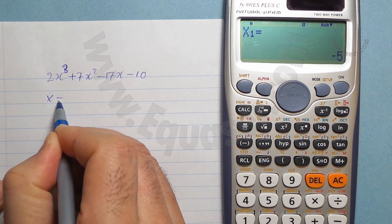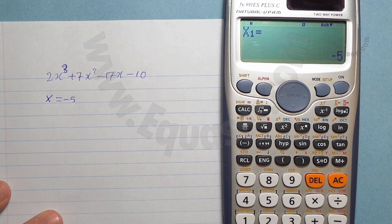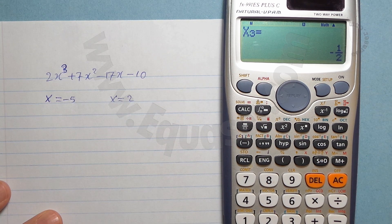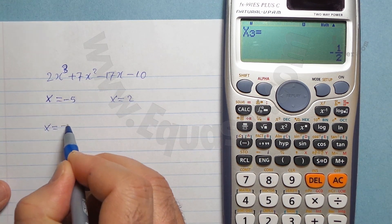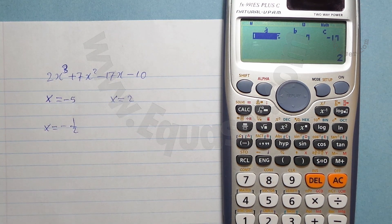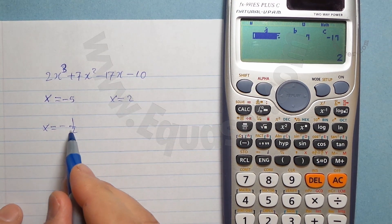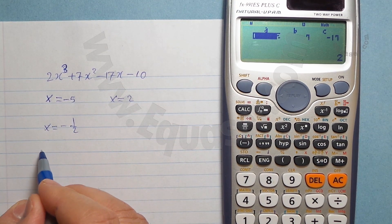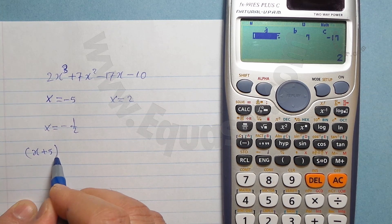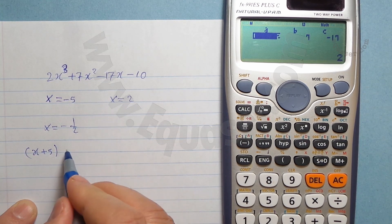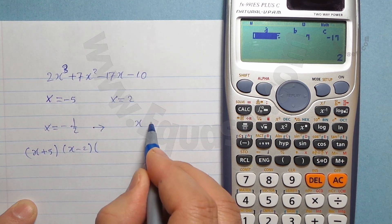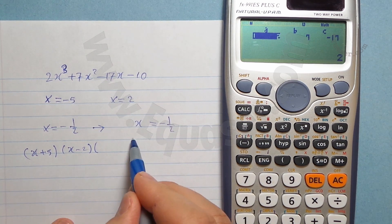I press equal sign. I get some values. So we get x is equal minus 5, x is equal 2, and x is equal minus 1 over 2. So we have three x's and these are the values.